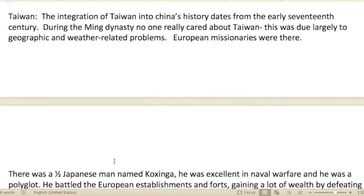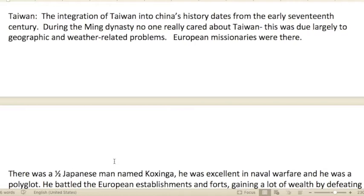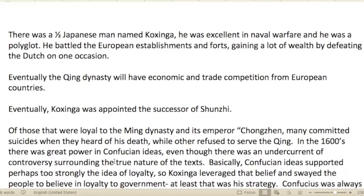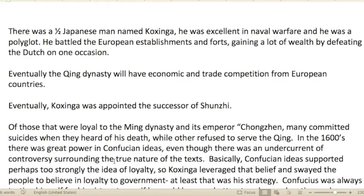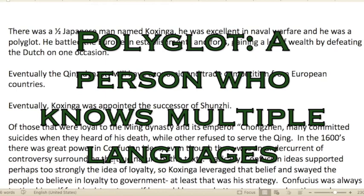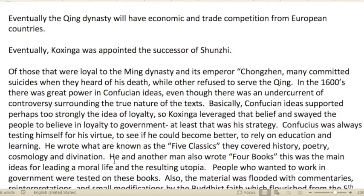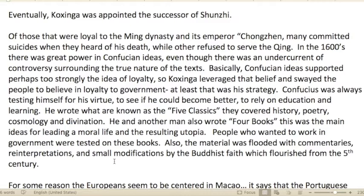The integration of Taiwan into Chinese history dates from the early 17th century. During the Ming dynasty, no one really cared about Taiwan, largely due to geographic and weather-related problems. There were European missionaries in Taiwan at this point. A half-Japanese man named Koxinga was excellent in naval warfare and was a polyglot. He battled European establishments and forts, gained great wealth by defeating the Dutch, and the Qing dynasty would eventually face economic and trade competition from European countries.